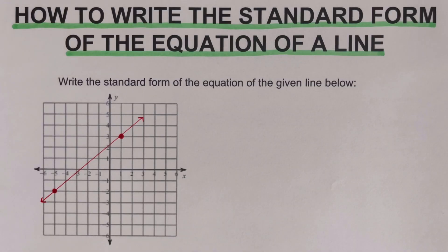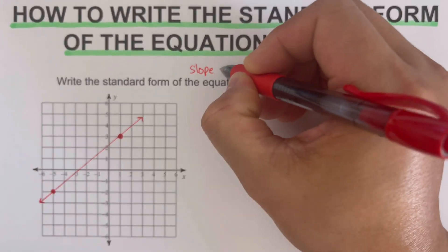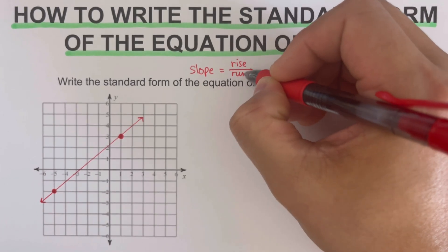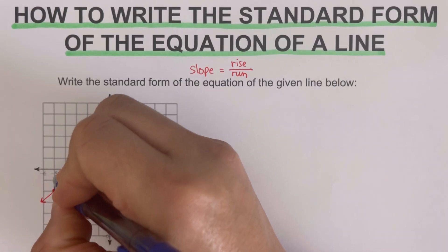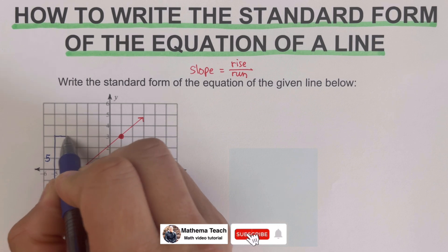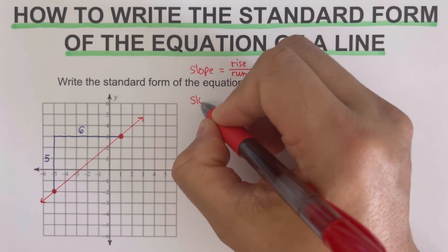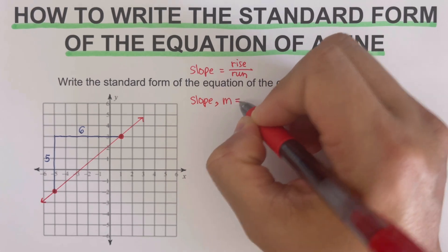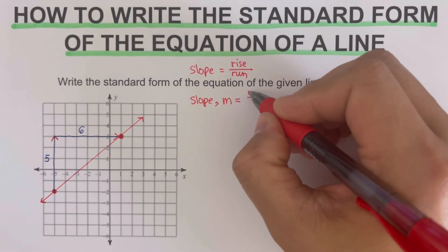Going back to the example, we need to determine the standard form of this line. First, we determine the slope, which is defined as rise over run. Since we're given two points, we go up 5 units and to the right 6 units. This tells us that our slope m is 5 over 6.